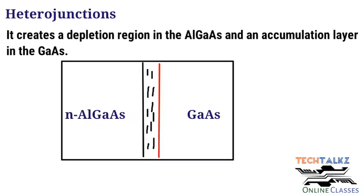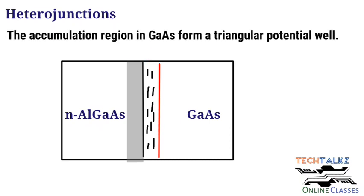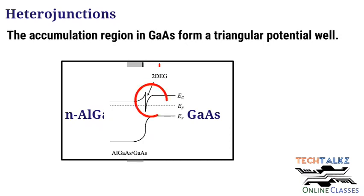Since the electrons are tunnelled to gallium arsenide from AlGaAs, a depletion layer is created at AlGaAs, and at the same time an accumulation of free electrons forms at the gallium arsenide interface. These are two different materials — different semiconductors with different bandgaps — and due to the discontinuity of energy levels between AlGaAs and GaAs, a triangular potential well is formed at the interface. In the next class, I will draw and explain the energy band diagram of single heterojunction and double heterojunction.